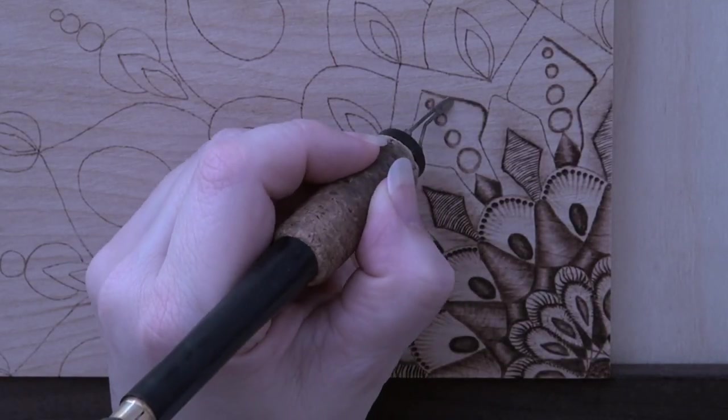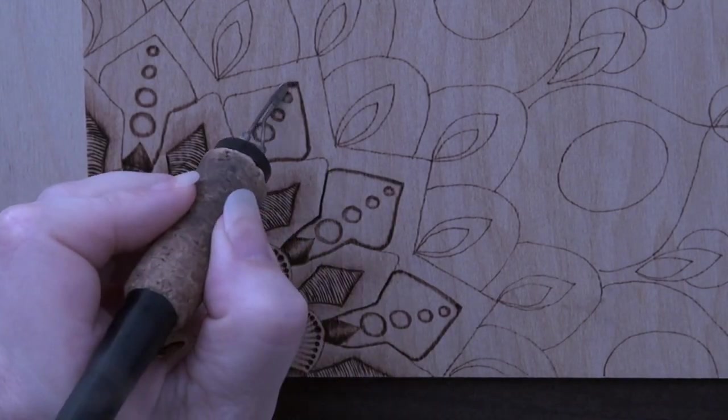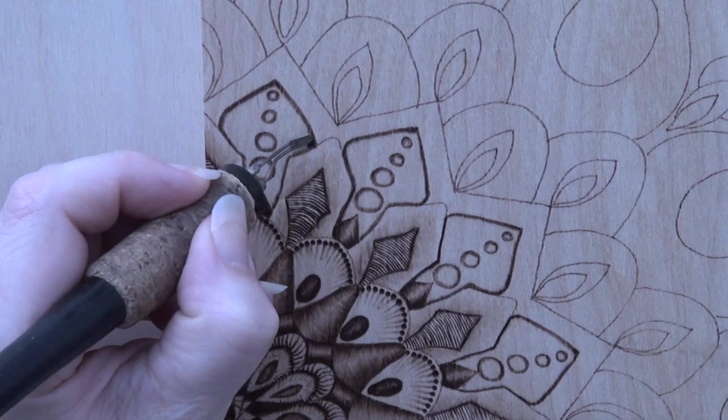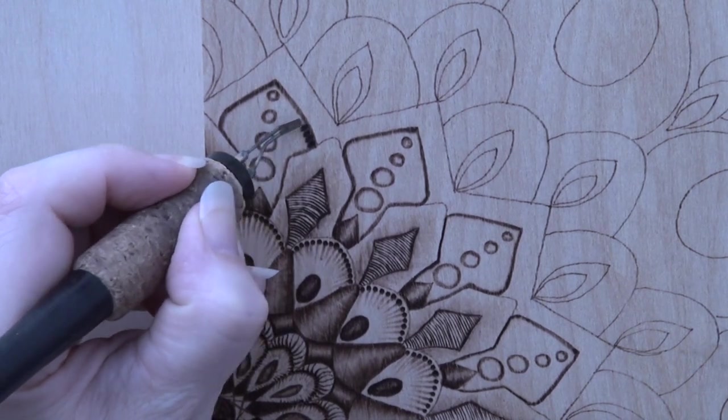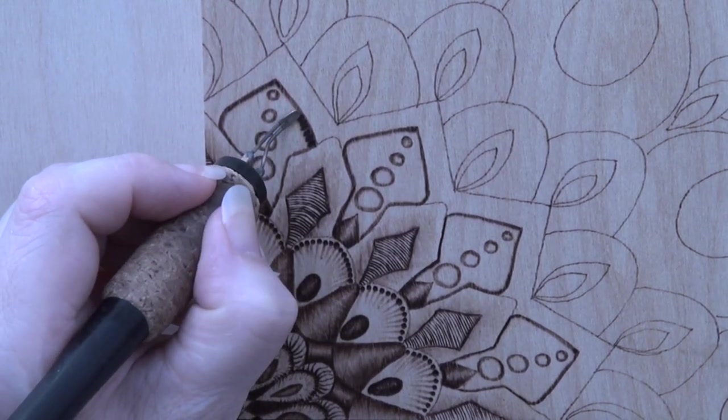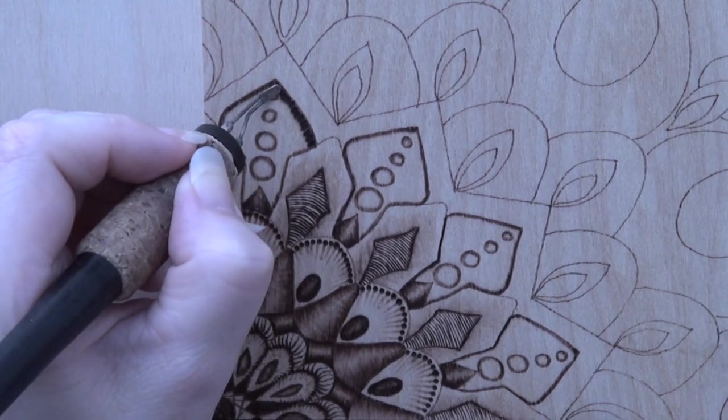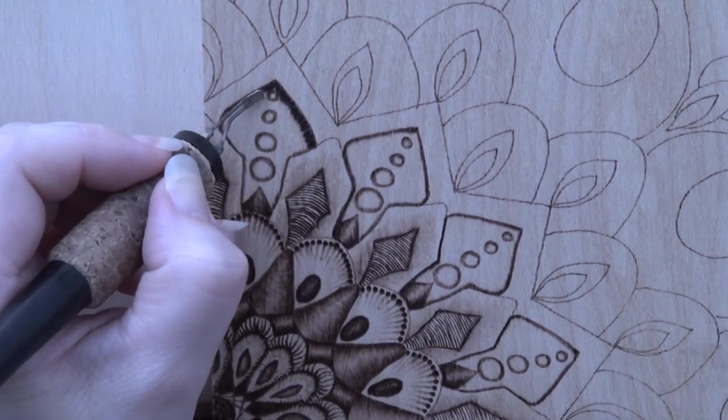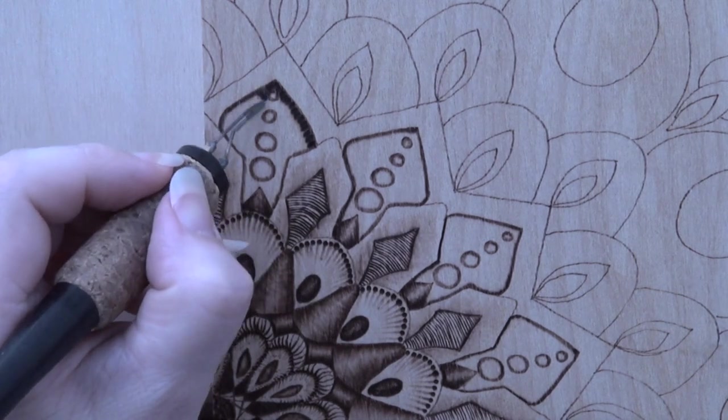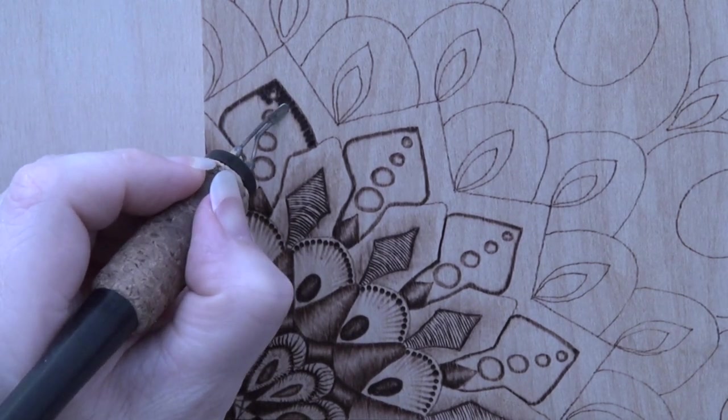Darkly burn along the outer edges of the curved triangles. Next fill in each triangle with leather texture. Leather texture is created by burning rows of dark blotches that slightly touch. You control how dark the blotches are by how long you hold the pen tip in place on the wood.